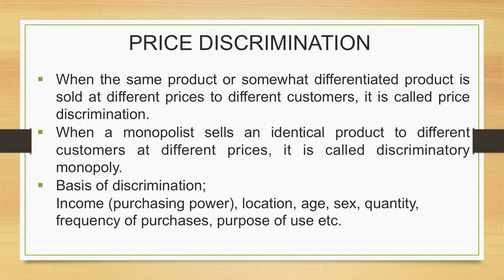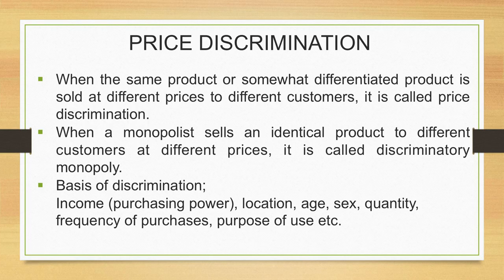When a monopolist sells an identical product to different customers at different prices, it is called discriminatory monopoly — that is a different situation altogether. But normally, when the same product or a little differentiated product is sold at different prices to different customers, it is called price discrimination.